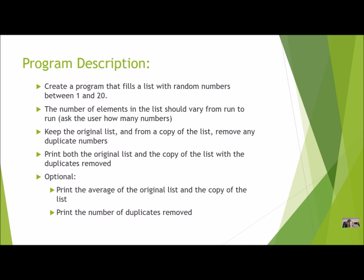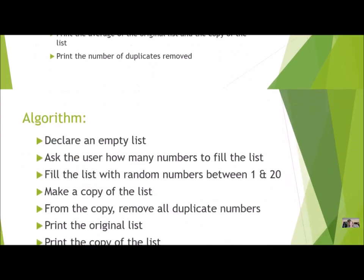There are some optional things you can add to your program that shouldn't be too difficult. Print the average of the original list and the average of the copy of the list. Also, a nice added bonus would be to print the number of duplicates removed. There are a couple of ways to do both of these things.